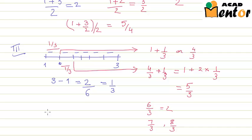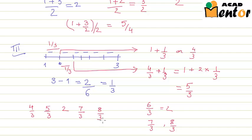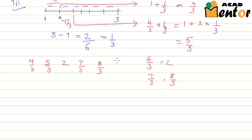So the 5 equidistant points between 1 and 3 are 4 by 3, 5 by 3, 2, 7 by 3, and 8 by 3. I hope this method helps you in finding more points between two given numbers.